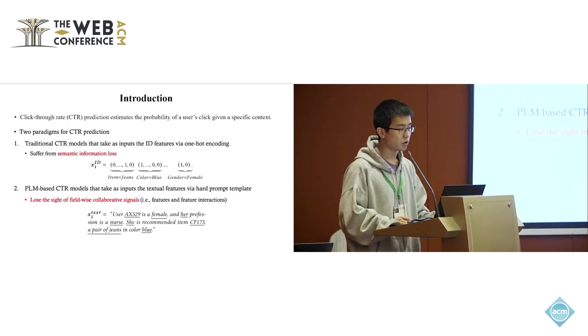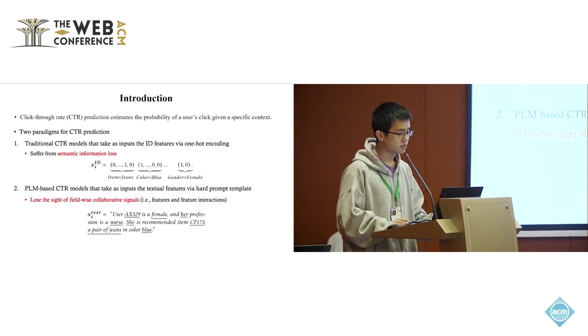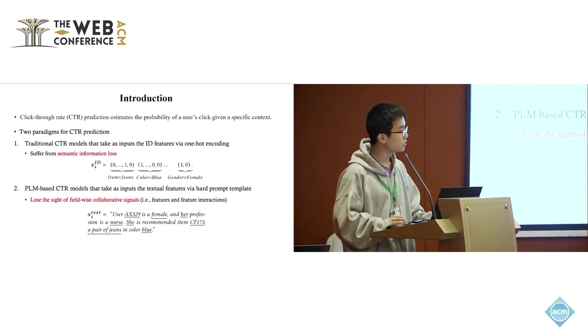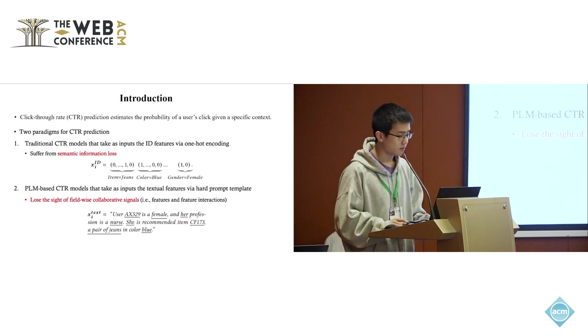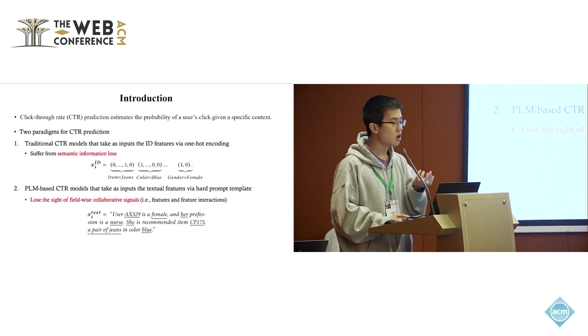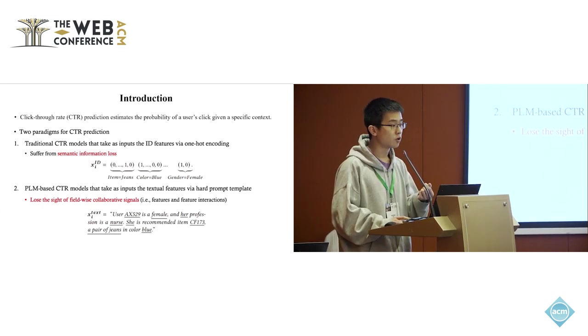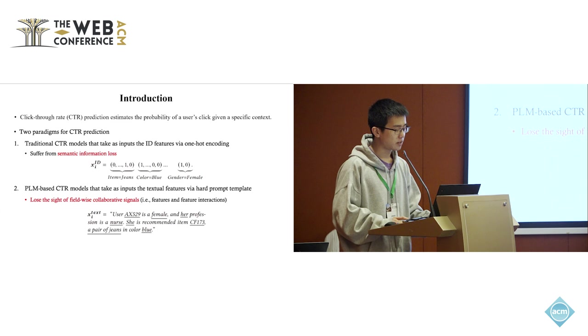The first one is traditional CTR models. They take as input the ID features via one-hot encoding, as shown in the first equation. We can see that categorical features like gender, female or male, will be converted into binary ID codes like 1-0 or 0-1.